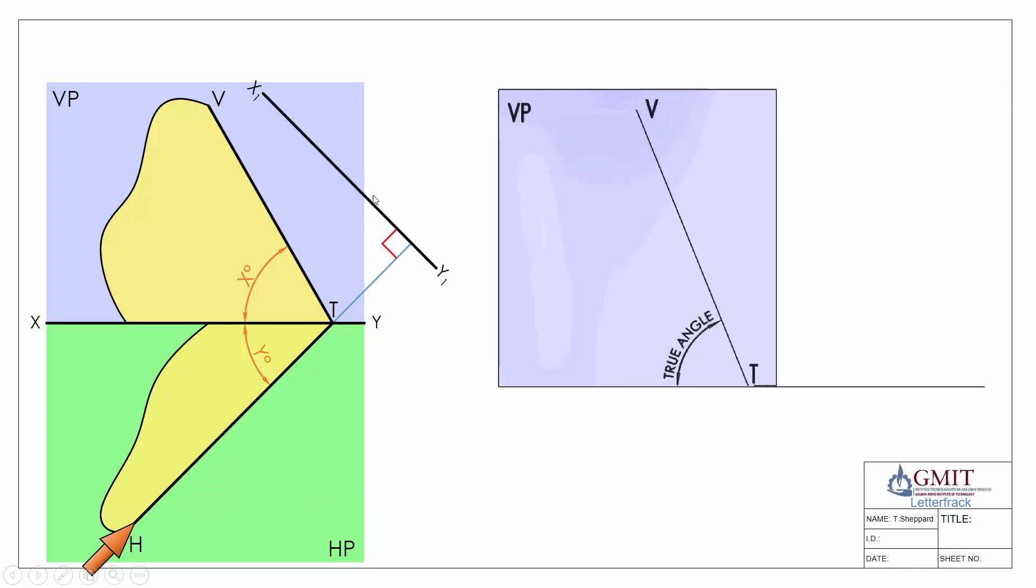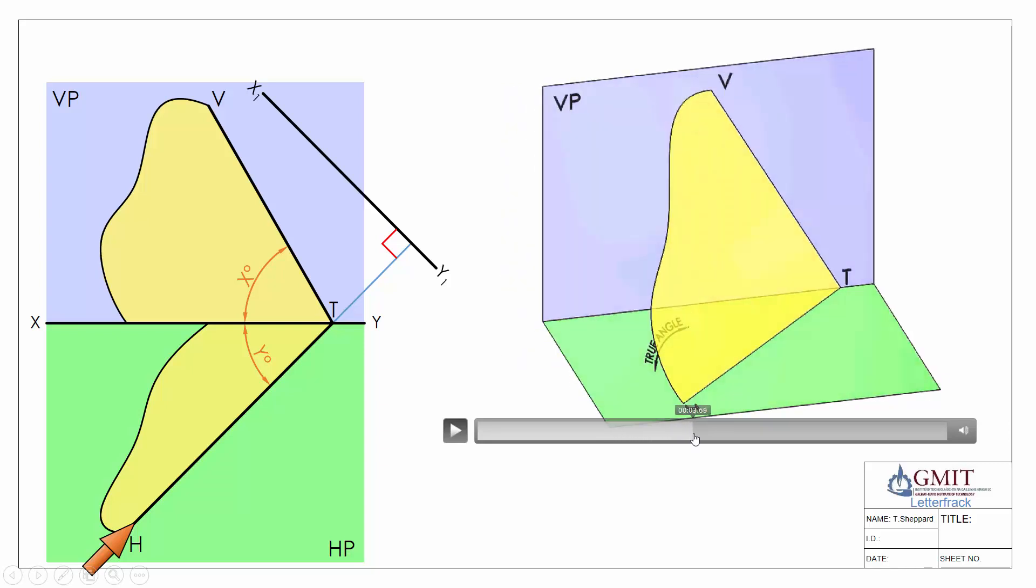If we're looking in this direction, that means we set up our X1Y1 line perpendicular to that viewing direction like so. You can see there's our horizontal trace which is on the ground here. We see our horizontal trace as a point, so that's one point on our edge view. To locate the edge view we need a second point.